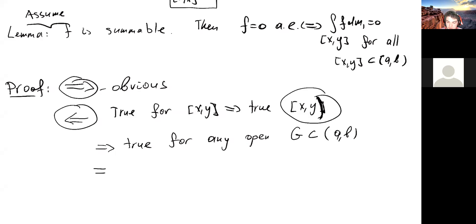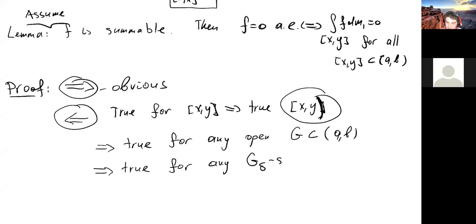A G-delta set is an intersection of open sets, so if for any open set the integral is zero, then for any G-delta set inside [a, b], if we integrate over any G-delta set we still get zero. The integral of a summable function is not exactly a measure, but we can break it into the integral of the positive part and the negative part — these are measures — and because f is summable everything is finite, so we're fine.